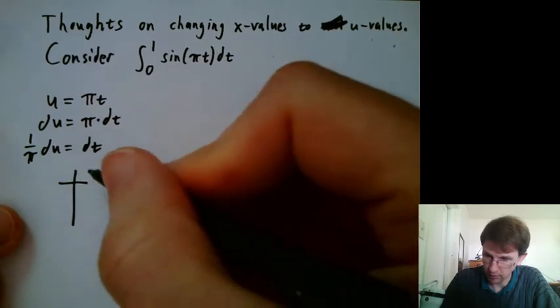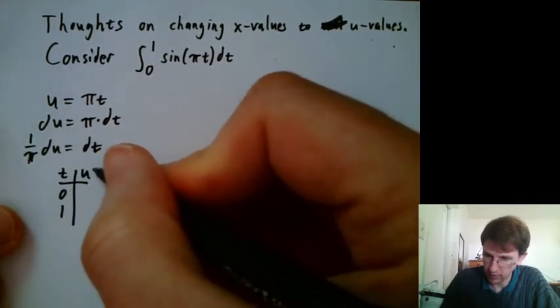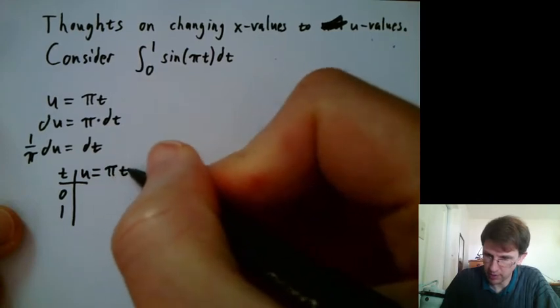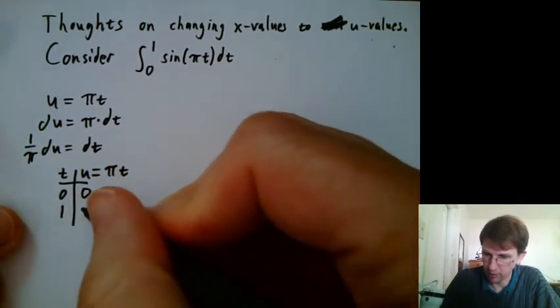We'd say when t is 0 and 1, u, which is π t, is 0 times π, which is 0, or 1 times π, which is π.